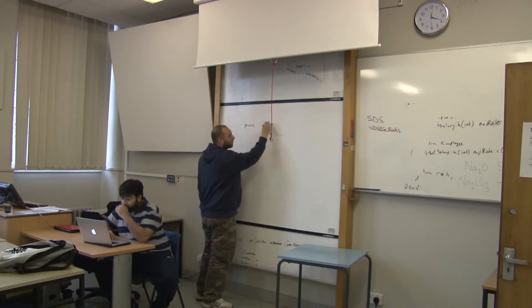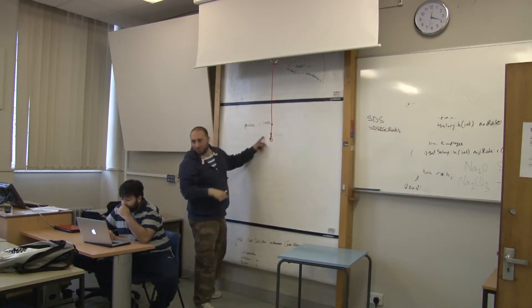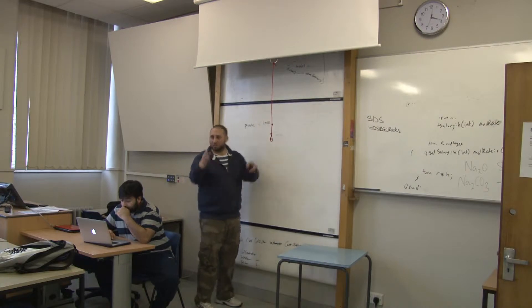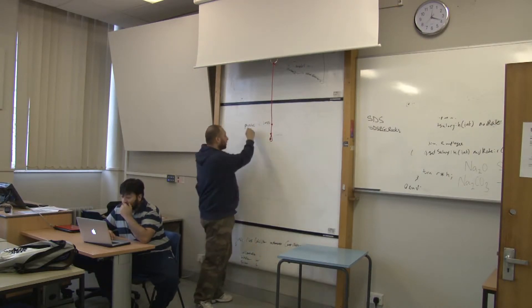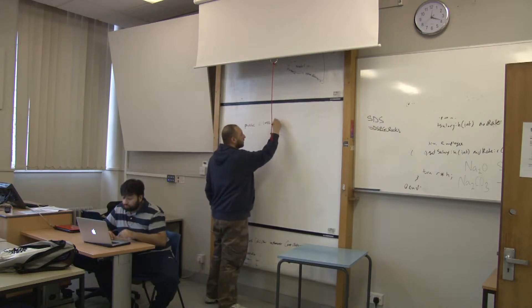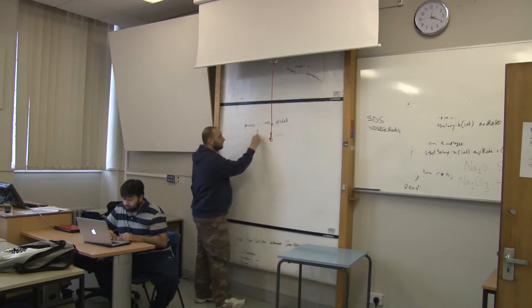I'm going to call it class. What's class for? Classification, that's like a template or an object. So public, class, wallet. And then you open it.